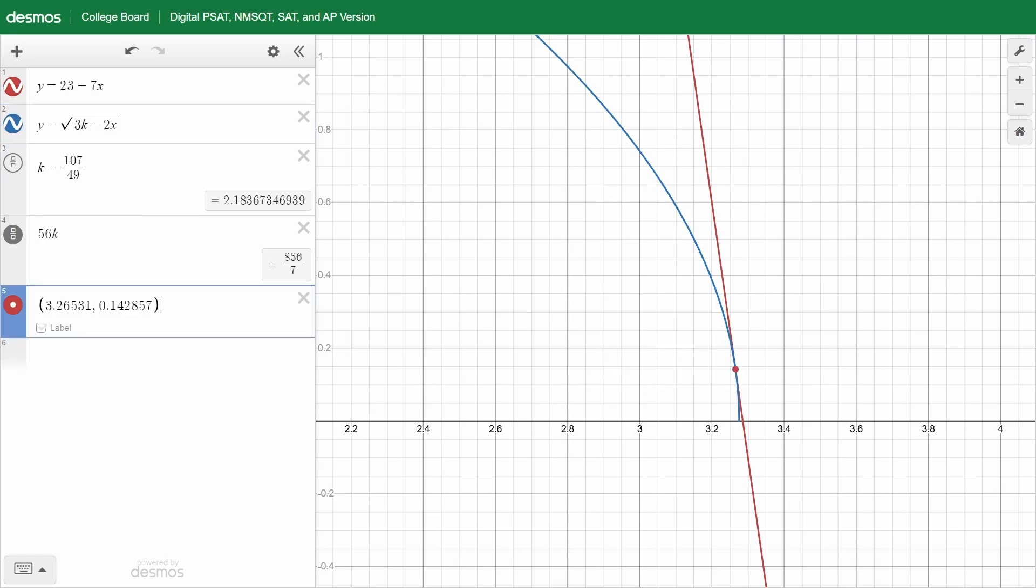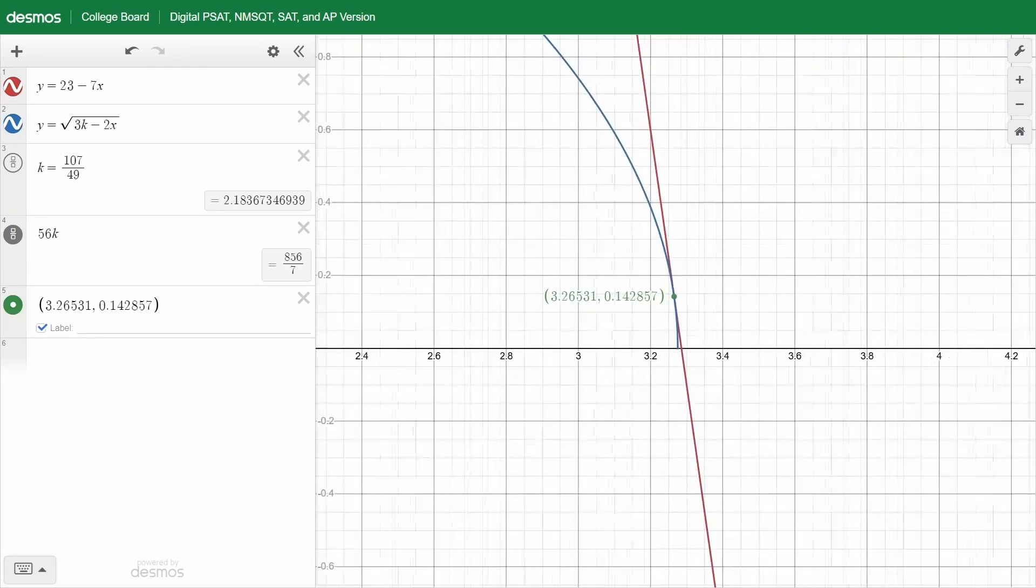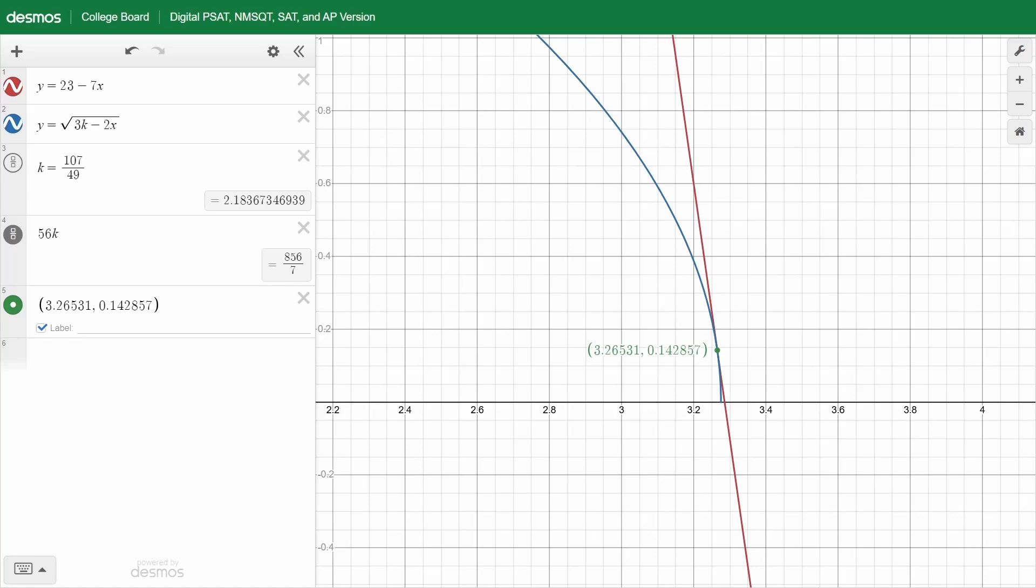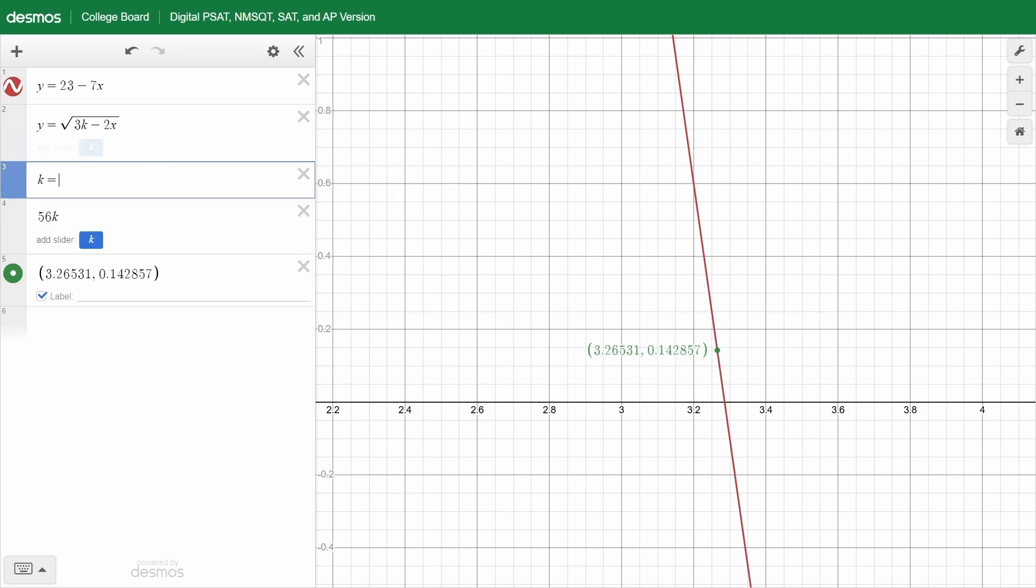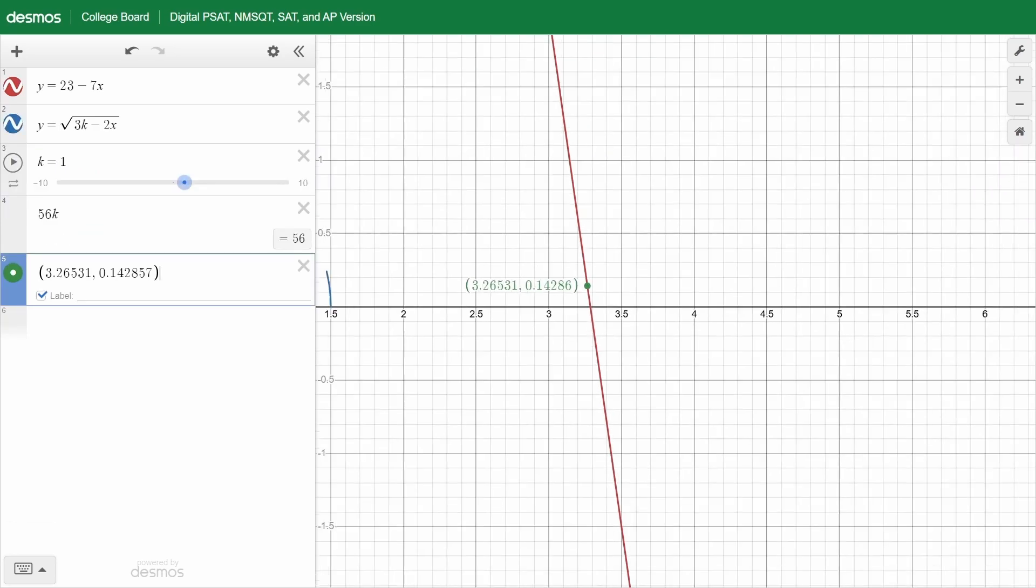So I'm going to export it just like last time and click label really quick. How about I change the color to something different? Now if I move around the graph, that point will still be there which is really helpful. So let's say I didn't know k was 2.1836.